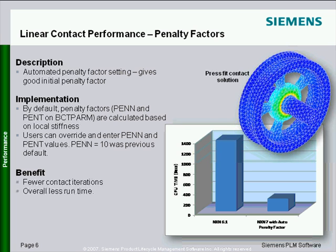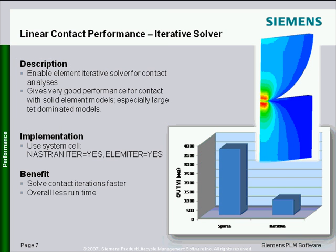For performance, we also worked on linear contact improvements. In version 6.1, we started introducing automated penalty factor computation. Before that, we just had a hard-coded factor which a user could override. Now we're calculating it based on model parameters, giving us an optimal penalty factor. In version 7, this is on by default — we're automatically doing it. This allows linear contact convergence in fewer iterations, and in some cases you can get about five times performance improvement in runtime.